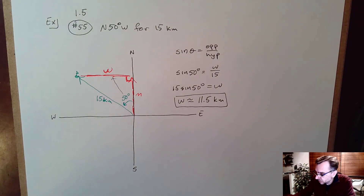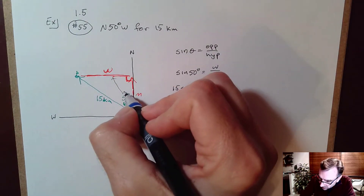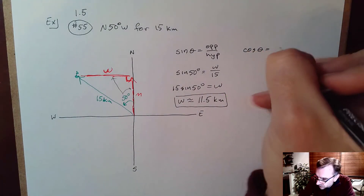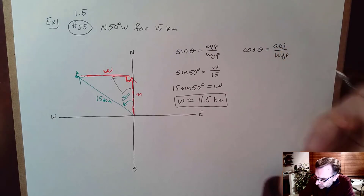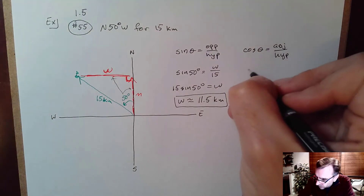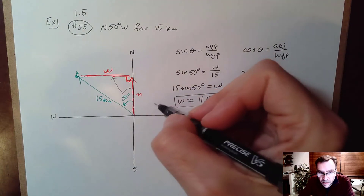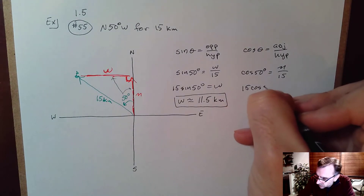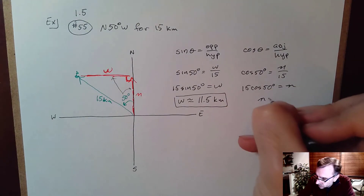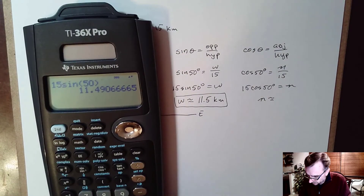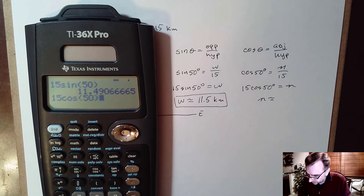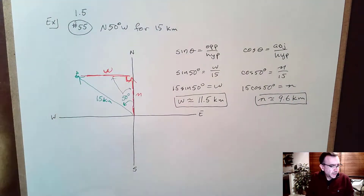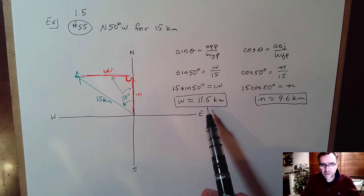Now for N, the distance north — it's the side adjacent, and I have the hypotenuse. Cosine of theta is defined to be adjacent over hypotenuse. So cosine of 50 degrees equals N over 15. Cross-multiplying: 15 cosine of 50 equals N. N is approximately 9.6 kilometers. That's how far north the boat went, and we already found how far west.